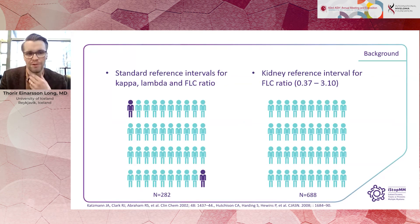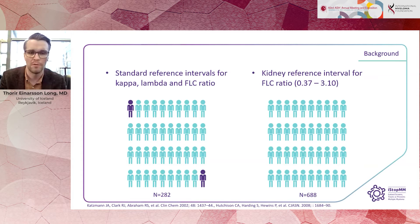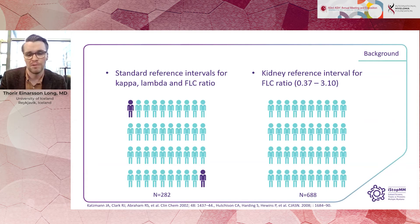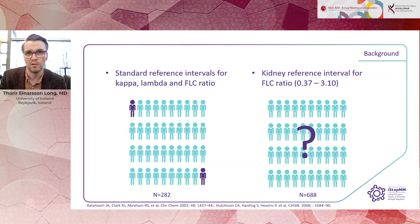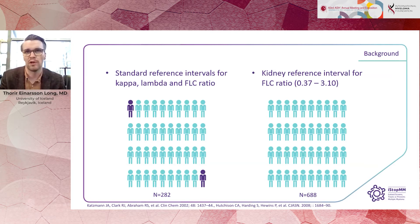How are the current references defined? The standard reference intervals for kappa, lambda, and FLC ratio were based on 282 healthy individuals without kidney disease, using the central 95% as normal — the bottom 2.5% and above 97.5% considered abnormal. The kidney reference interval was based on 688 individuals with kidney disease where multiple myeloma had been excluded, but they used the whole range of levels as normal, resulting in a very wide interval of FLC ratio considered normal in kidney disease.